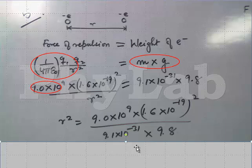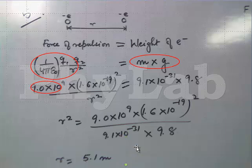So, I am just reframing the formula for r square is equal to 9 into 10 to the power of 9, etc. And then, finalizing the result, I got r to be equal to 5.1 meter. Thank you.